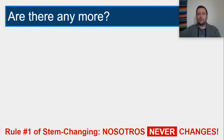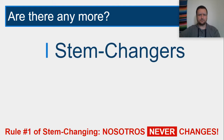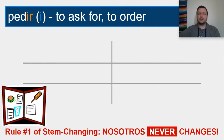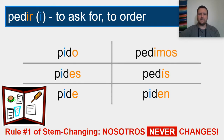There are a lot of UE changers, but those are the ones we'll focus on for this chapter. Now I want to focus on I-changers. More good news — I-changers are pretty much the same as UE changers, which are pretty much the same as IE changers. Let's take a look at the verb pedir, 'to ask for or order.' The forms of pedir are: pido, pides, pide, pedimos, pedís, piden. NOSOTROS never changes.